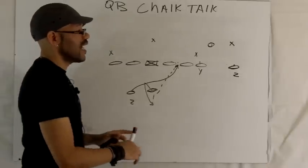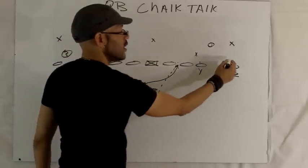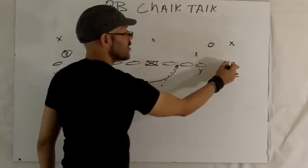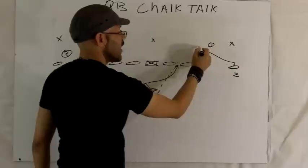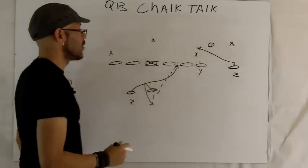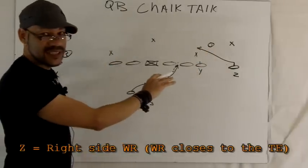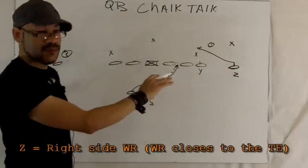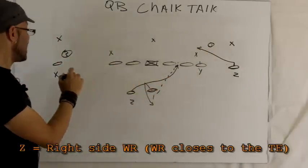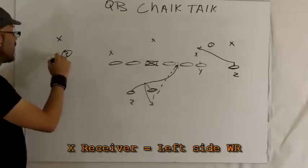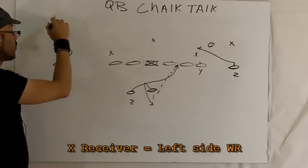Against that cushion, we have a three-step slant from the Z receiver. On the X receiver side, we have a go route.